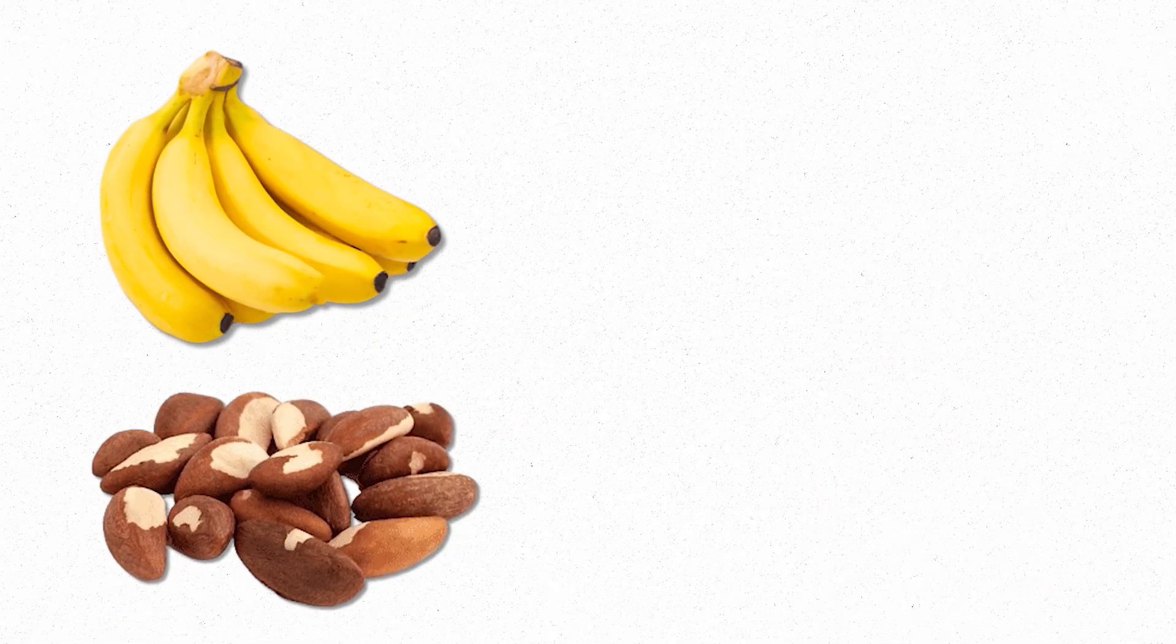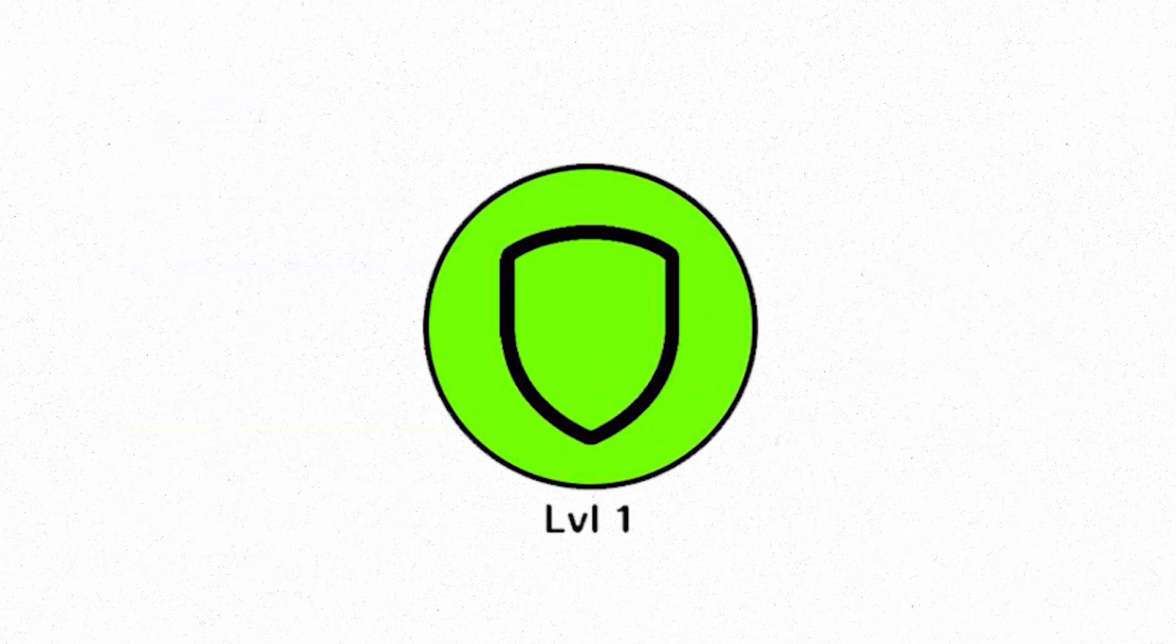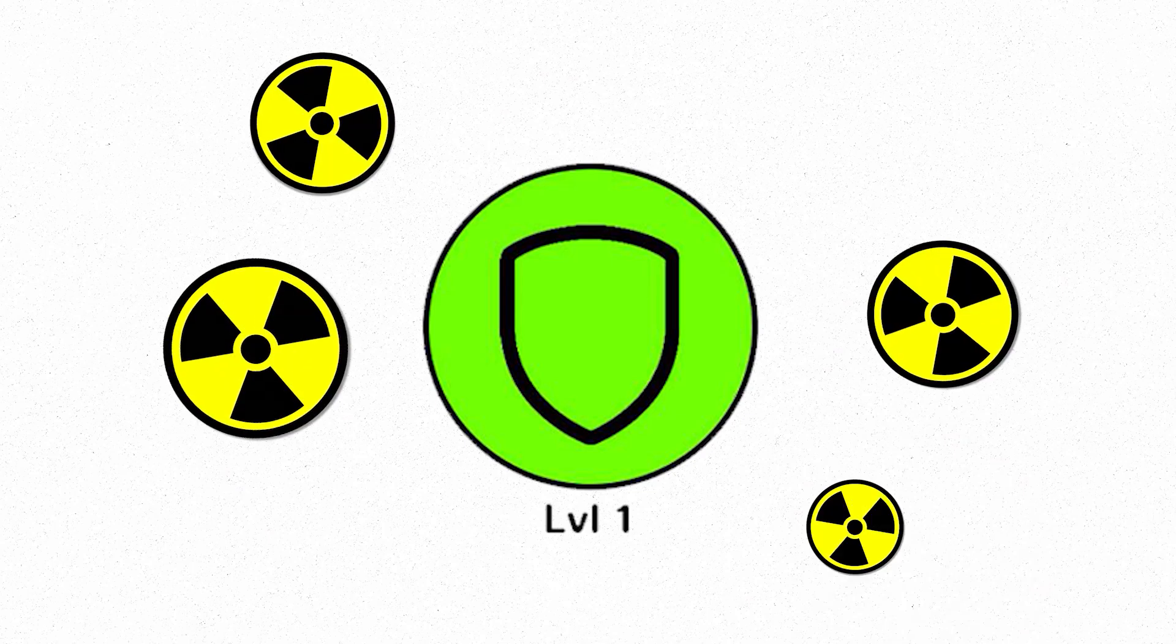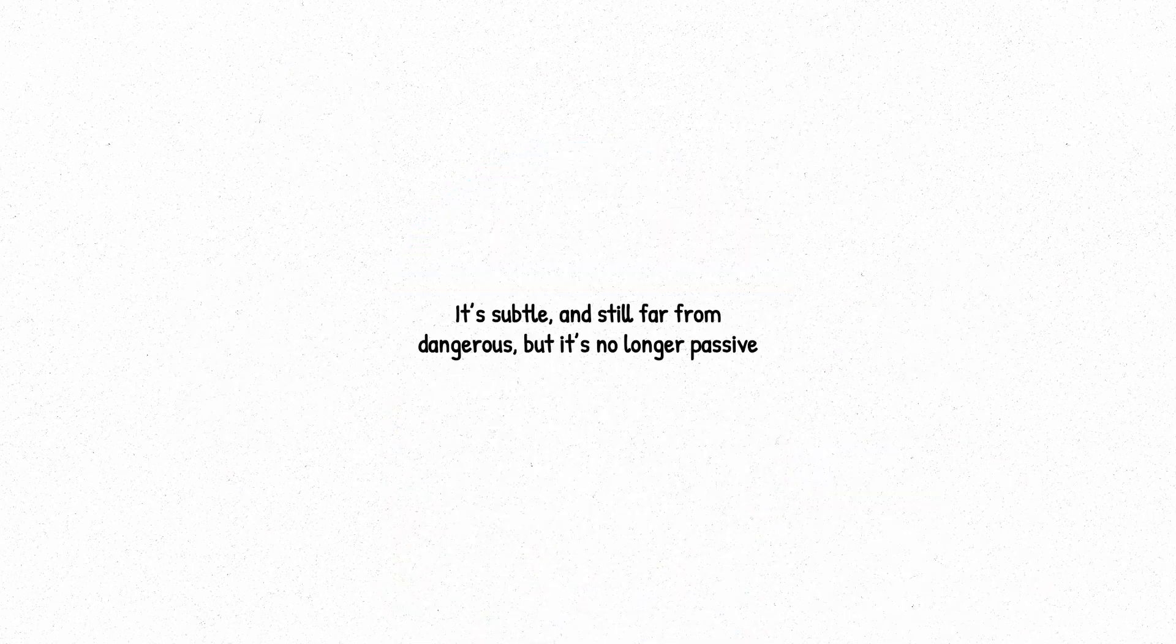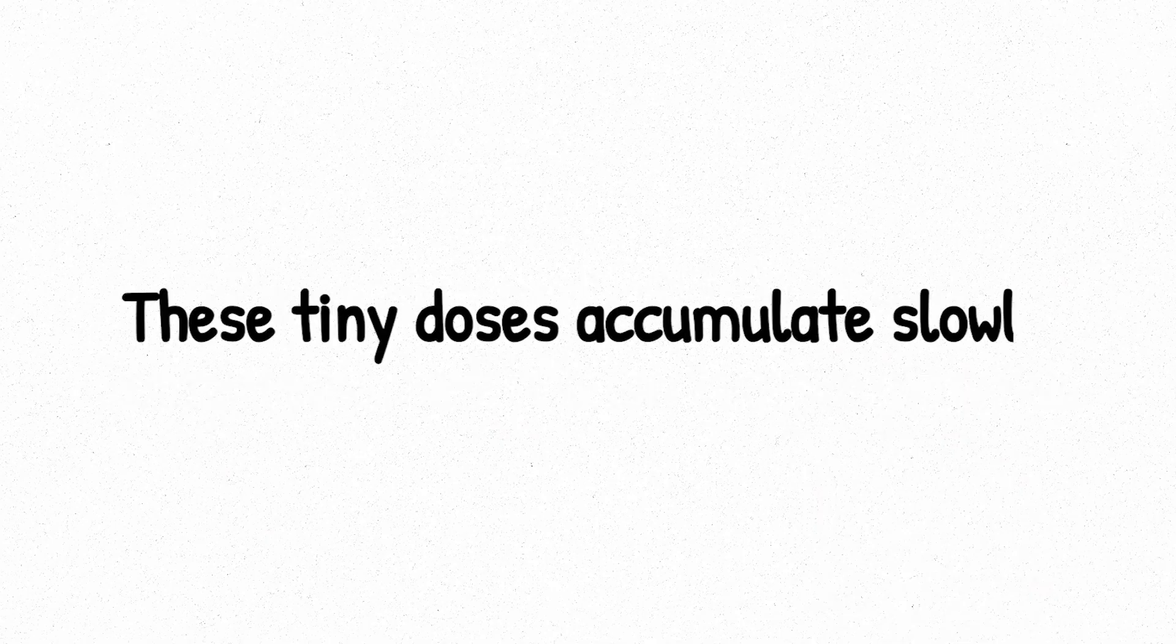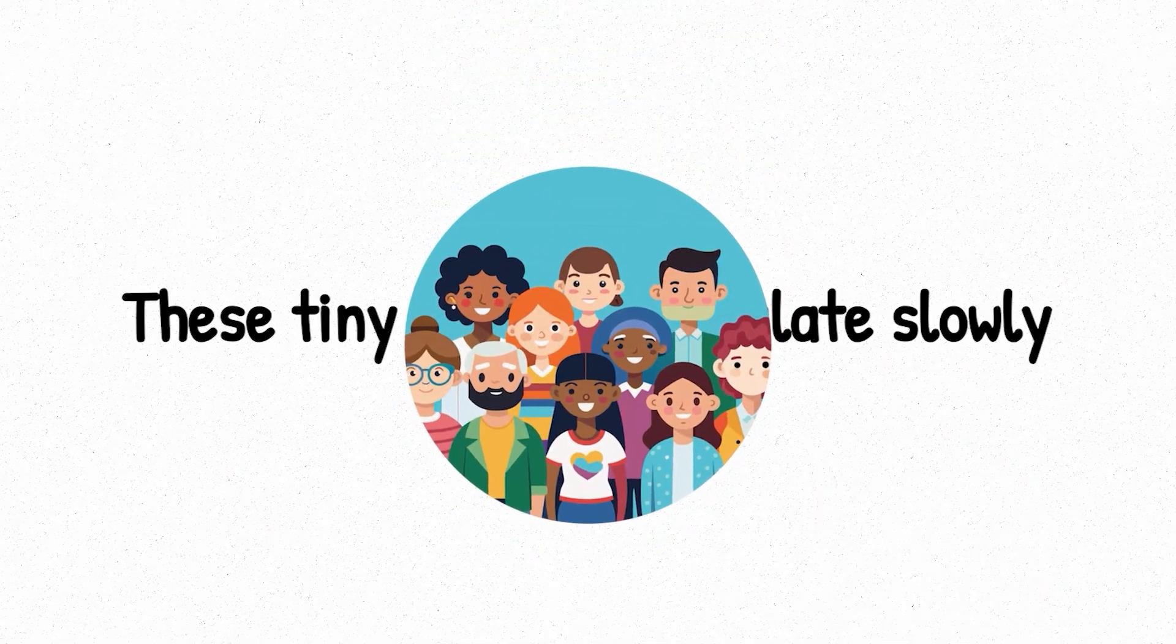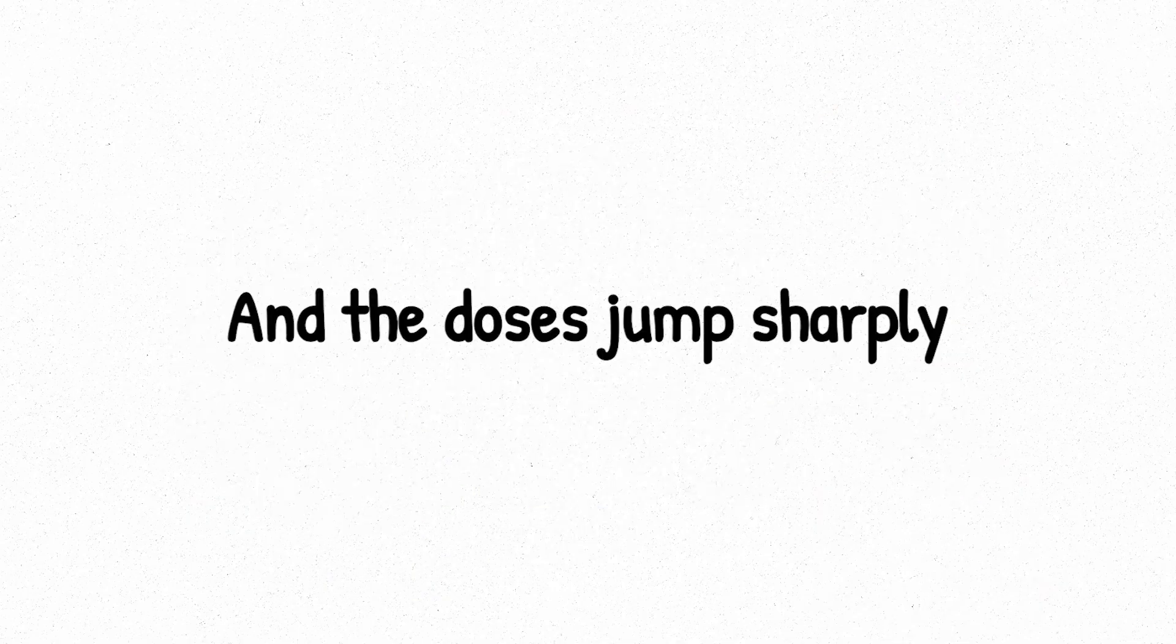Pilots and flight attendants often receive more annual radiation than nuclear plant workers. Even seemingly harmless choices, like eating certain foods, add to your exposure. Bananas, Brazil nuts, even your drinking water can contain trace radioactive elements. The difference from level 1? Here, we're not just surrounded by radiation. We're choosing to interact with it. It's subtle, and still far from dangerous, but it's no longer passive. These tiny doses accumulate slowly, and for most people, they're nothing to worry about. But what happens when exposure isn't optional when we start using radiation as a tool? That's where we head next, and the doses jump sharply.